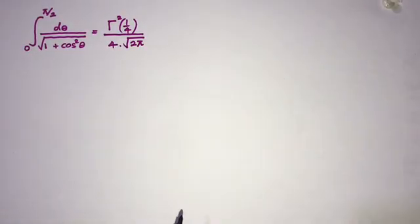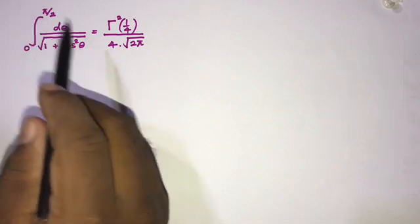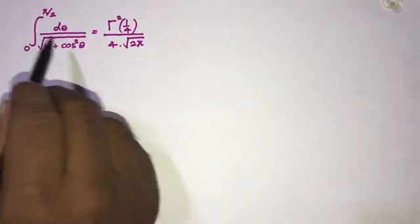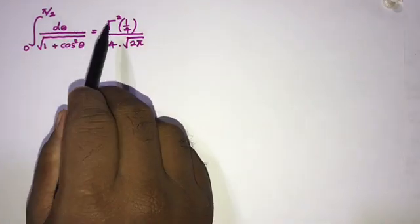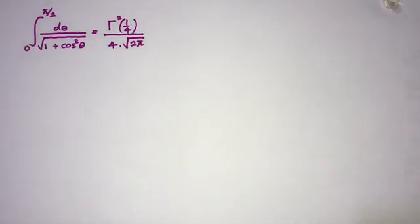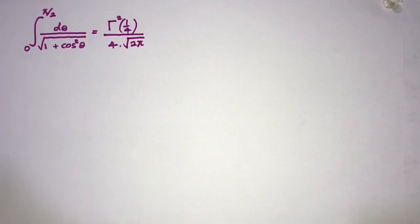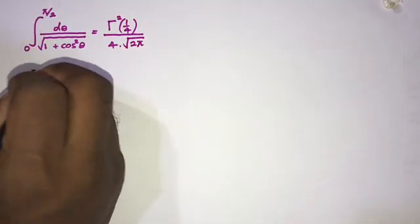Welcome to the mathematics channel. Today we are going to solve another interesting integral. The question is the integral from 0 to π/2 of dθ over the square root of 1 plus cosine squared of θ, which is equal to gamma squared of 1/4 divided by 4 times the square root of 2π. How to show this? We will take the left hand side.